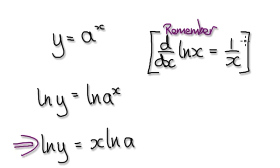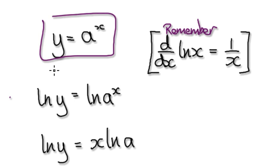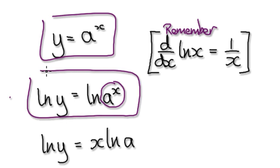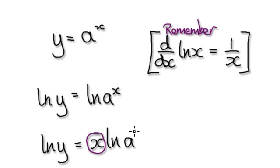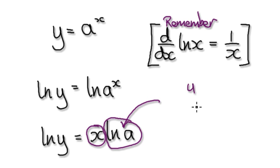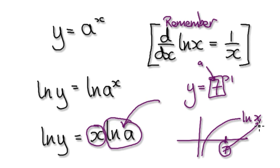Remember from an earlier video, if you differentiate log of x, that gives you 1 over x. Now here you've got a bubble multiplying another bubble. This first bubble — log(a) — is just a constant, a number that doesn't change. For example, if y equals 7 to the power of x, then 'a' is 7, and log(7) is just a fixed number. So log(a) is a constant.